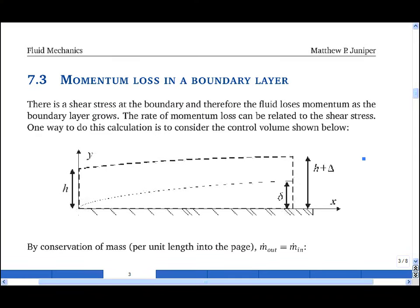At a boundary, we can consider that X momentum diffuses down through the boundary layer, which both causes a shear stress at the boundary and means that the free stream is continually losing momentum. We can relate the rate of momentum loss to the shear stress at the boundary.